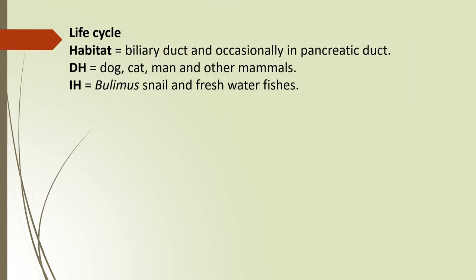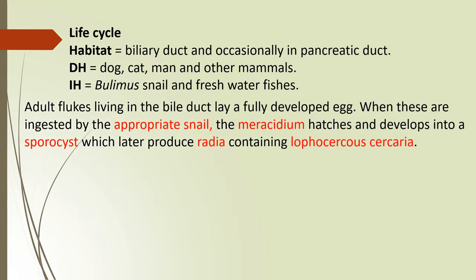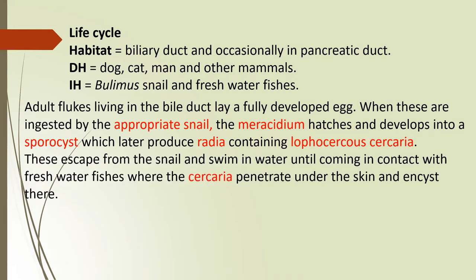This liver fluke resides in the bile duct and occasionally in the pancreatic duct. The definitive hosts are dog, cat, man and other mammals. Intermediate hosts are the Bulinus snail and freshwater fishes. Adult liver flukes live in the bile duct and lay fully developed eggs. When ingested by the appropriate snail, the miracidium larva hatches and develops into sporocysts, which later produce rediae containing lophocerocous cercariae. These escape from the snail and swim in water until contacting freshwater fish, where the cercaria penetrates under the skin and encysts there.